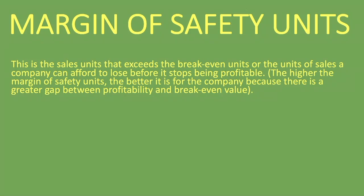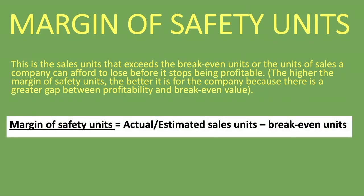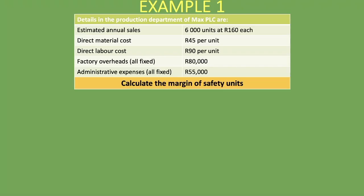There's a greater gap between profitability and the break-even value. So how do you go about calculating the margin of safety units? Well, it's the actual or estimated sales units minus the break-even units. It's not that difficult to calculate as long as we are given the figures, and you'll see that right now as we go through the example.